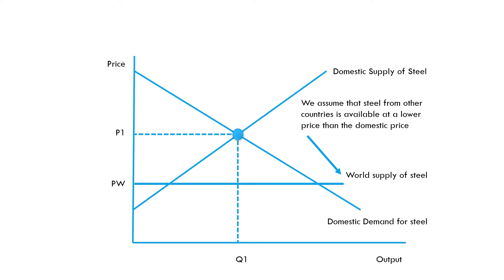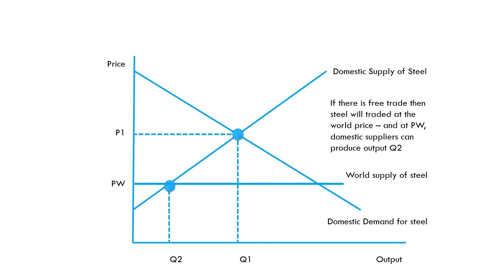So what impact does that have on the market? Our domestic companies cannot really compete with the new price Pw. Going along the domestic supply curve down to Pw, we can see that domestic suppliers will now only produce Q2 of steel — only the most competitive domestic suppliers can survive at that price.